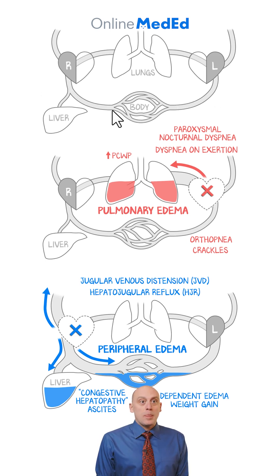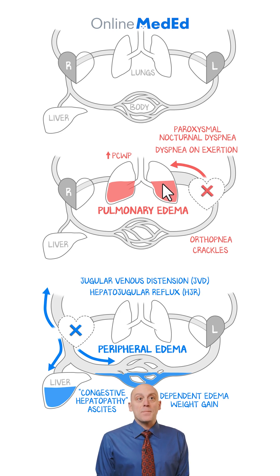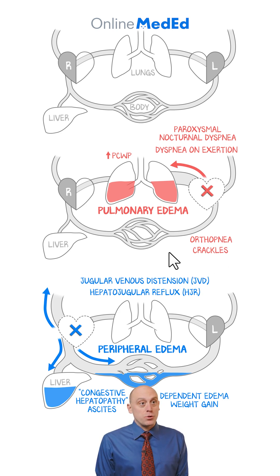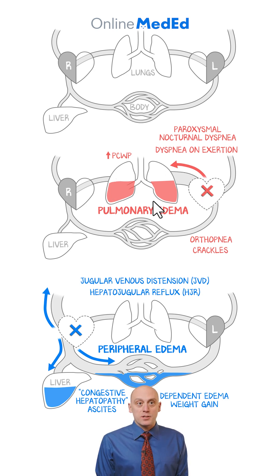Using the two heart model: if the left heart breaks, fluid backs up before the broken pump and you get pulmonary edema. You'll present with paroxysmal nocturnal dyspnea, orthopnea, and dyspnea on exertion. On auscultation you'll hear crackles, and on heart cath — which you should not do to diagnose heart failure — you'll see an elevated pulmonary capillary wedge pressure. All of this reflects left heart failure with pulmonary edema.